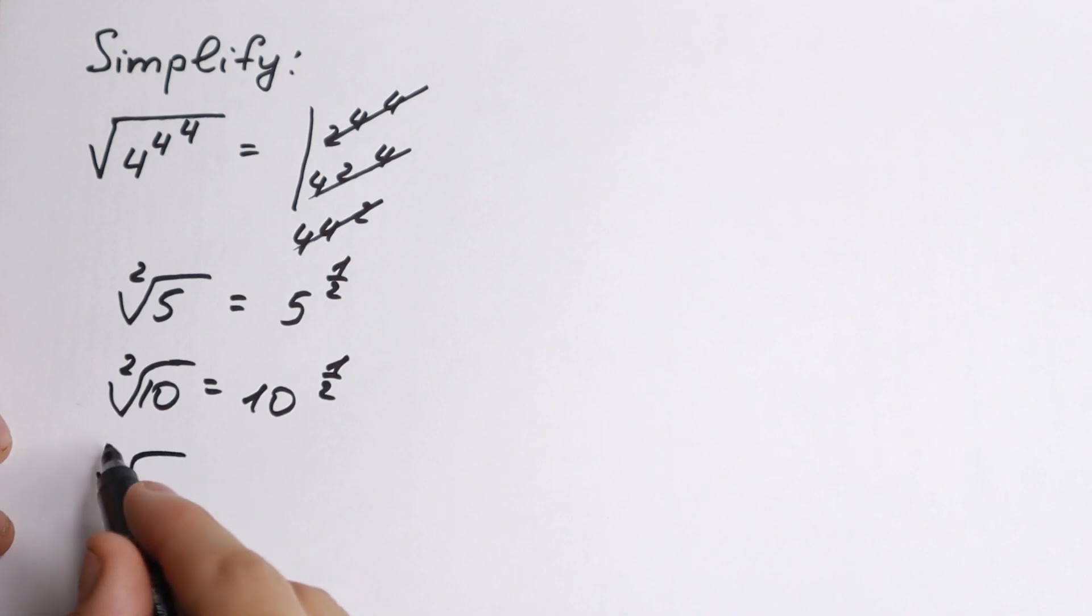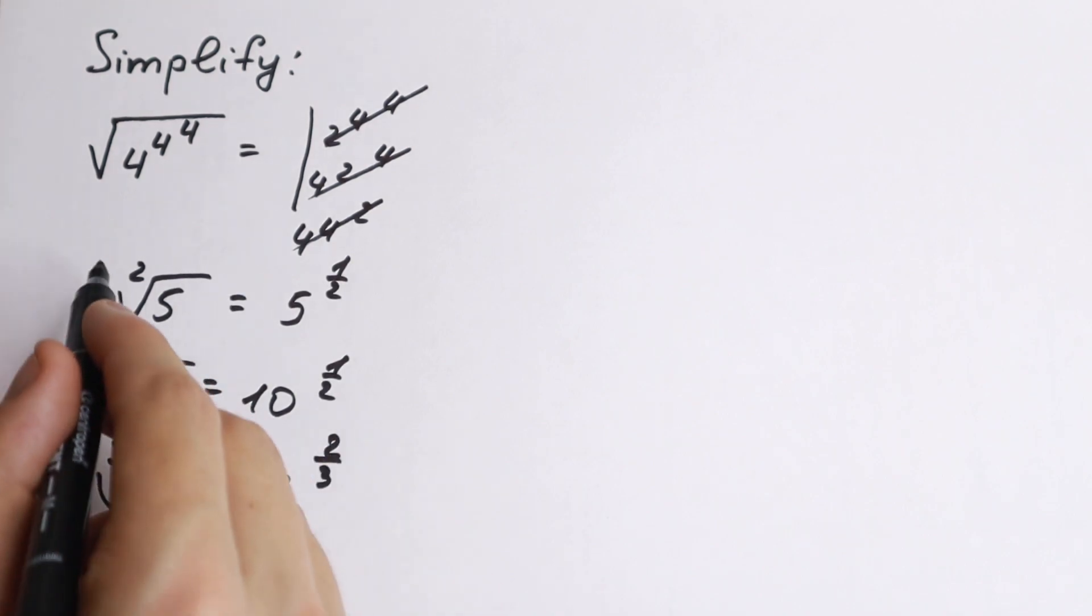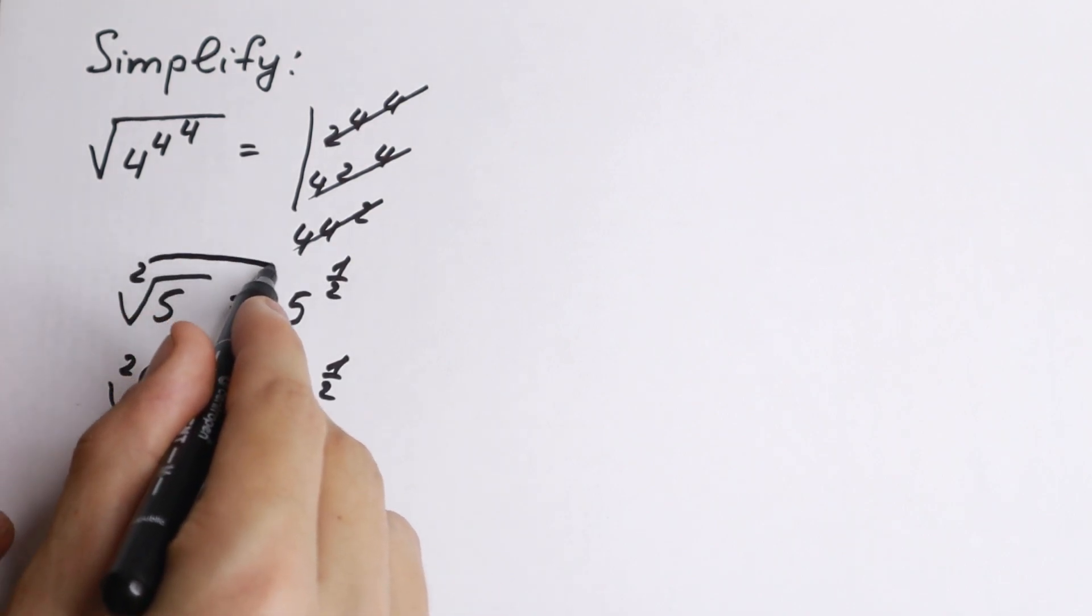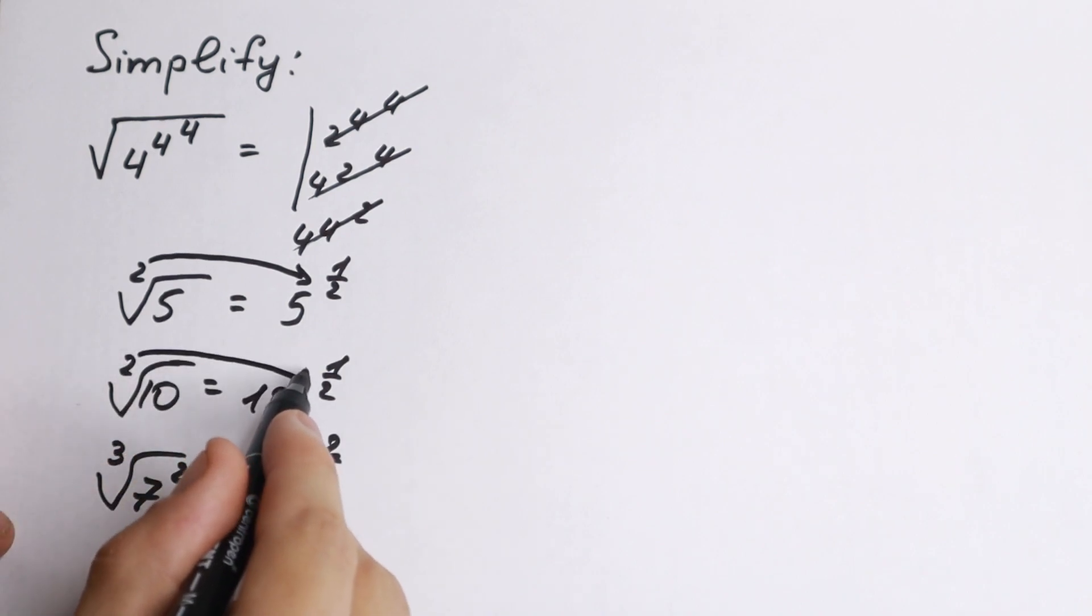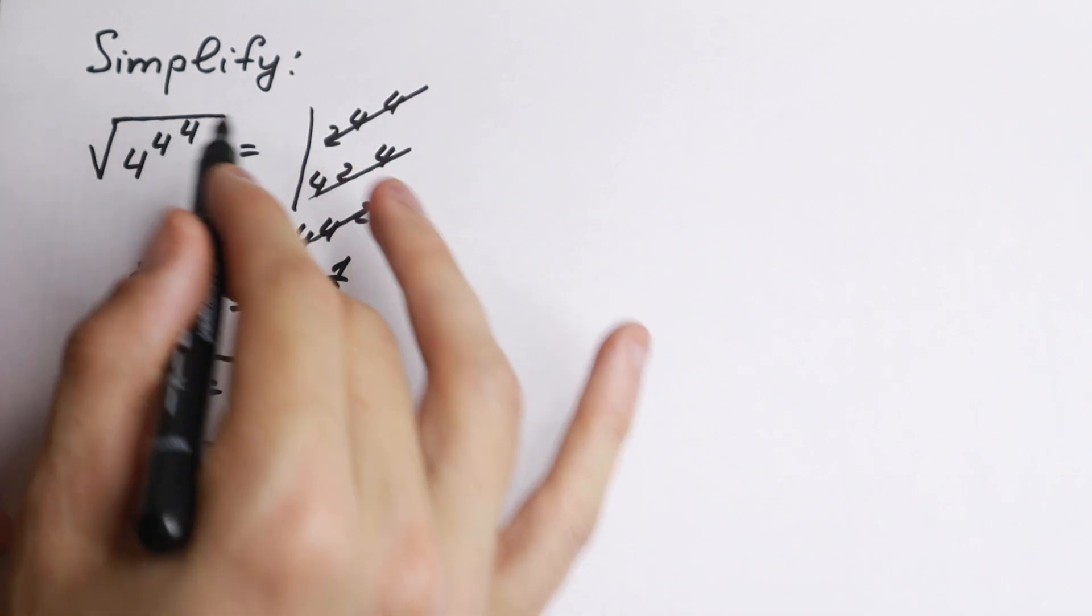For example, cube root of 7 squared. We can write it as 7^(2/3). I want to show you one really interesting moment right now. Take a look - this 2 goes in our denominator, this 2 goes in our denominator, this 3 goes in our denominator. The power of the root divides our power.